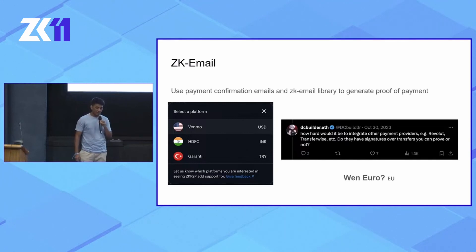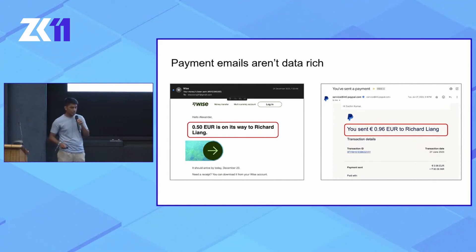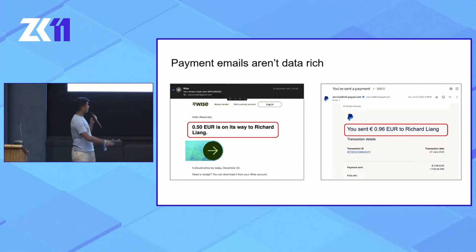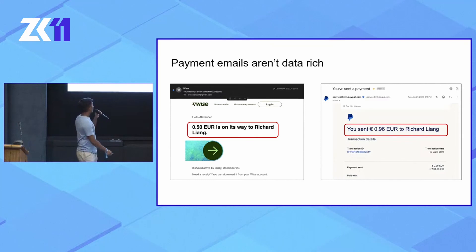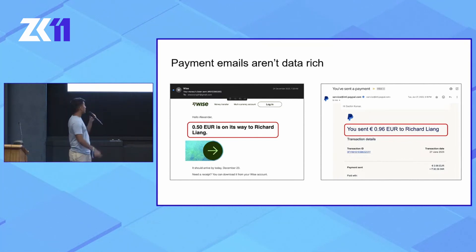But one question we keep getting asked is: when euro? We have looked at several payment emails for a potential euro integration. One blocker we've hit consistently with the euro integration, as well as other integrations, is that payment emails aren't data rich. For example, this is a screenshot of a Wise payment confirmation email for a transaction I sent to Richard. You can see there's the amount and currency, but there's no unique identifier of the receiver.